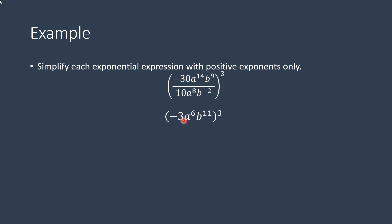That's more manageable. Let's raise each of those to the 3rd power. So negative 3 to the 3rd power would be negative 27. a raised to the power would be a raised to the 18th. 6 times 3 is 18. 11 times 3 is 33. So that would be b raised to the 33rd power. And that's it.